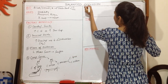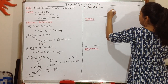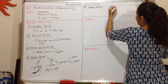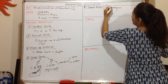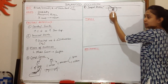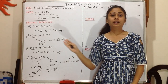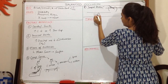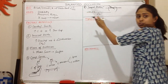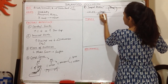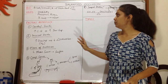Last but not least we have cuspal inclination. Cuspal inclination is the angle formed between the cuspal plane and the cusp tip of a molar. We study these five factors because for a balanced denture, the condylar guidance and incisal guidance must be in harmony with the plane of occlusion, the compensating curves, and the cuspal inclination. Only when all five factors balance each other can we achieve a balanced occlusion.